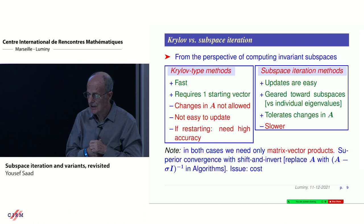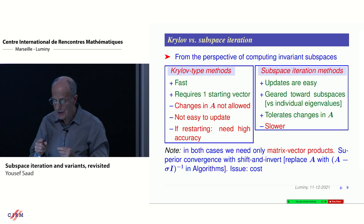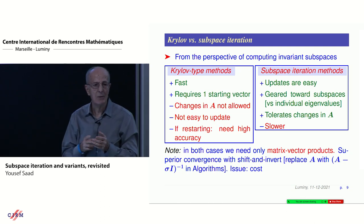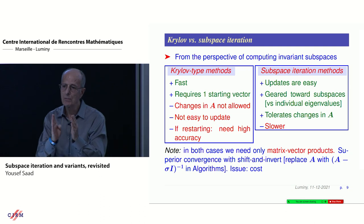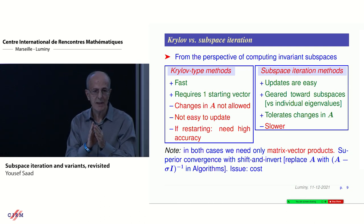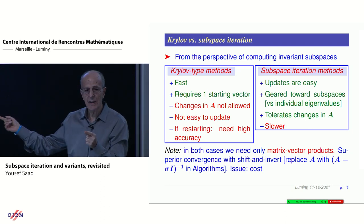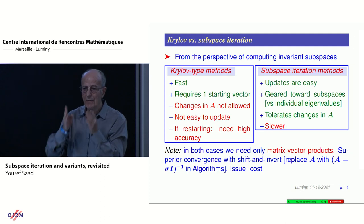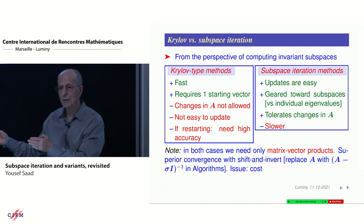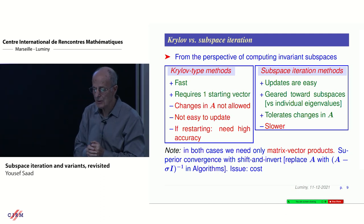If you use Lanczos, then you've computed a subspace, and you want to restart, you need one vector only. But if you do any sort of restarting, they amount to deflation. That means the first eigenvectors you compute have to be accurate. If you say, everyone only needs four digits, ten minus four, then the rest you get, the other eigenvectors you get would be garbage in general. You have to have high accuracy from the beginning.